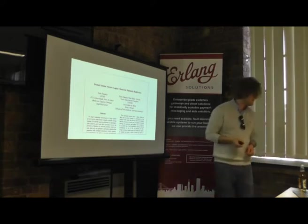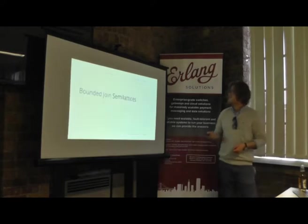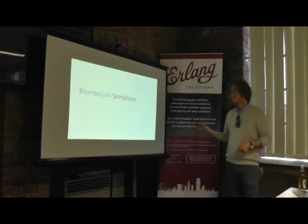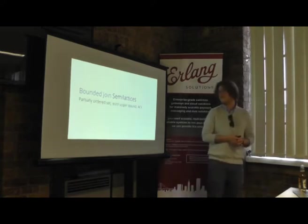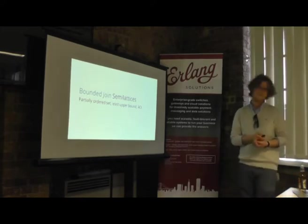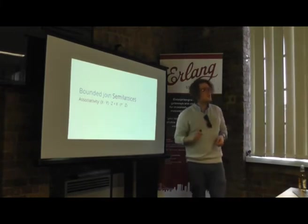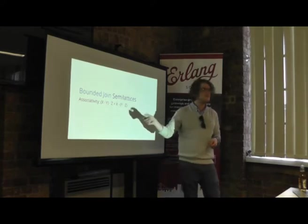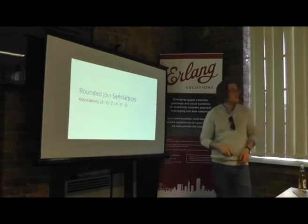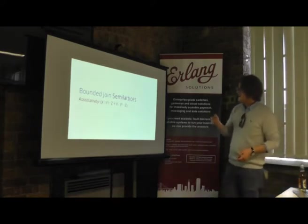The math behind this: bounded join semi-lattices are a concept from discrete mathematics — a partially ordered set with a least upper bound function. This function has three important properties: associativity, commutativity, and idempotence. Associativity means batching operations gives the same result regardless of grouping. Commutativity means you can reorder the two operands and get the same result — very nice for distributed systems where events arrive in different orders. Idempotence means applying the same operation multiple times gives the same result, which matters when messages get sent more than once.